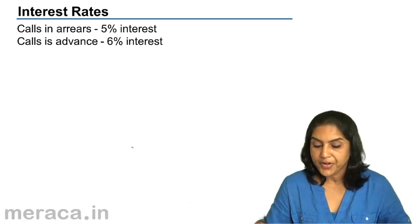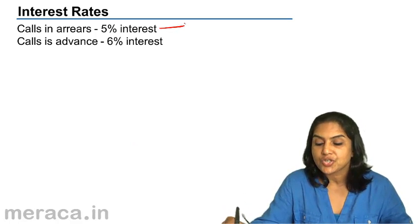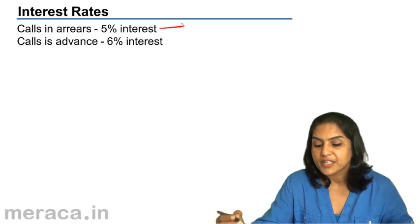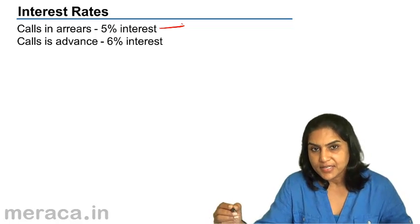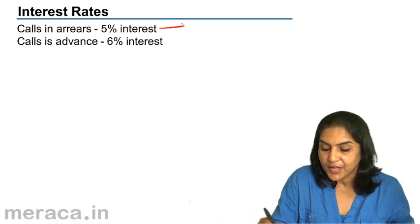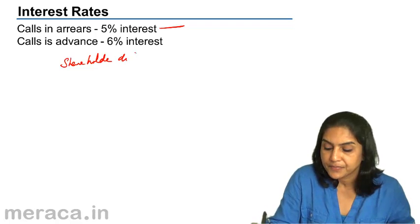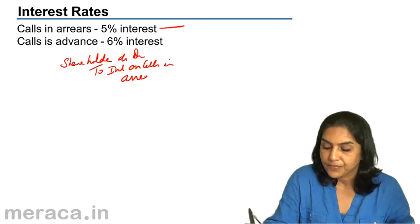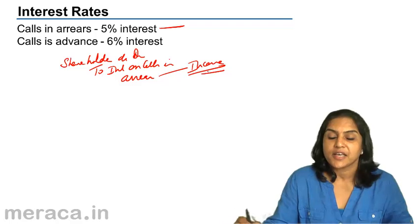The maximum rate of interest that is charged on calls in arrears is 5%. Of course, interest may not be charged — the company may waive the interest; it is optional. When interest is charged, the entry would be: shareholder account debit to interest on calls in arrears. Interest on calls in arrears is an income account and is therefore credited.